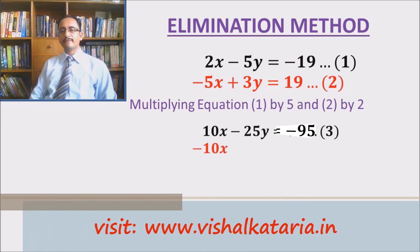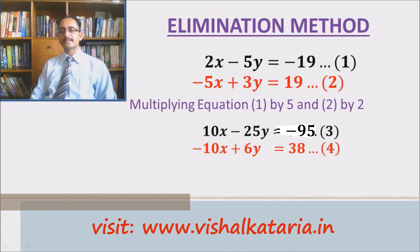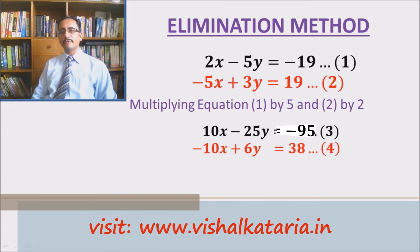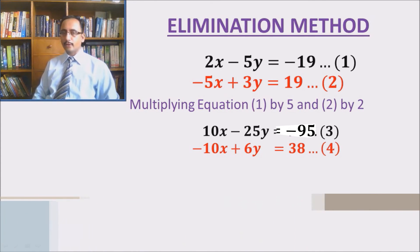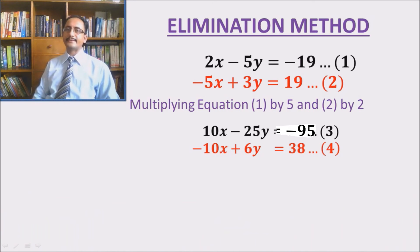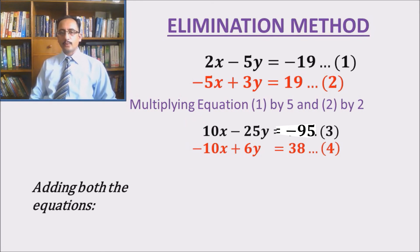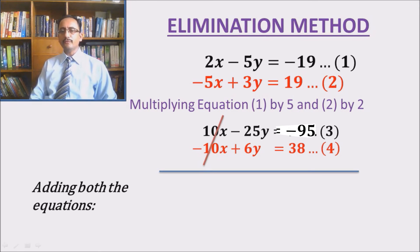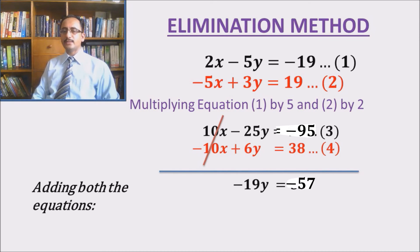The new equations are: 10x minus 25y equals to minus 95 and minus 10x plus 6y equals to 38. The coefficients of x are equal in magnitude — 10 in both cases — but their signs are opposite. As we discussed, when signs are opposite we add the two equations. Adding them: 10x and minus 10x cancel, and minus 25y plus 6y equals minus 19y, and minus 95 plus 38 equals minus 57. Dividing both sides by minus 19 we get y equals to 3.